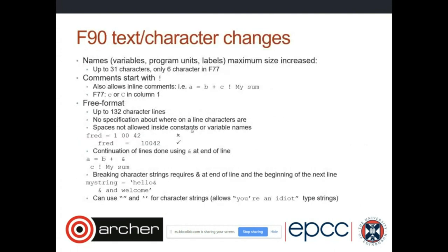One of the most notable changes between Fortran 77 and Fortran 90 is how you're allowed to write the source — the text format. Fortran 77 used a fixed-format text file where you had to write in certain column positions to do certain things. Fortran 90 introduced a free-format file where the position of your words and characters doesn't really matter.